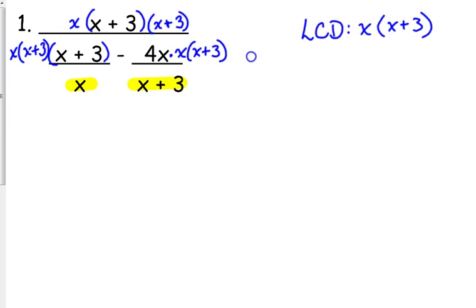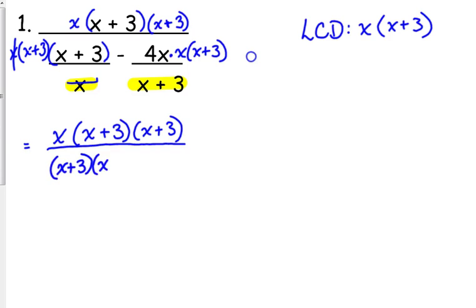So, as I mentioned, the top doesn't have a denominator. Nothing's going to cancel, so I'm just going to recopy all that. x times x plus 3 times x plus 3. In the bottom, the x's cancel, so we've got x plus 3 times x plus 3.